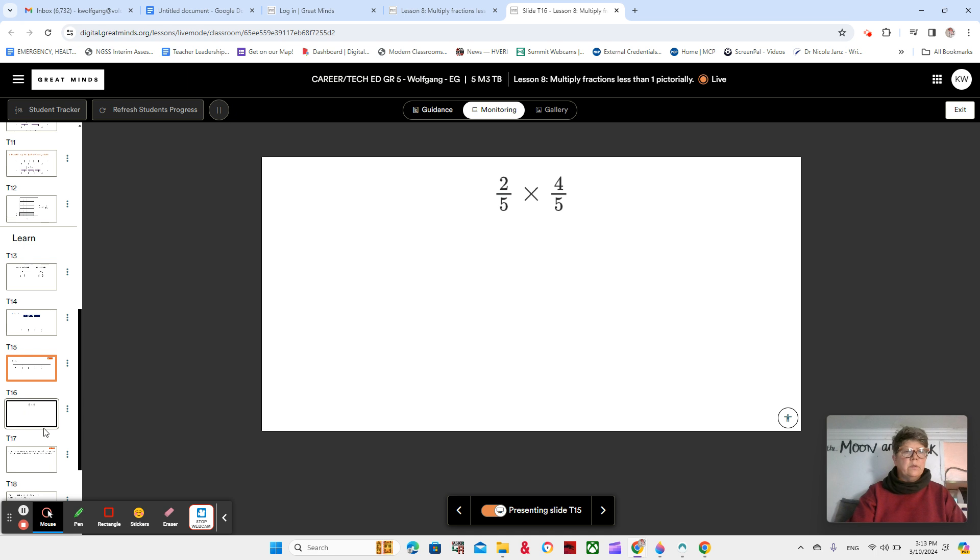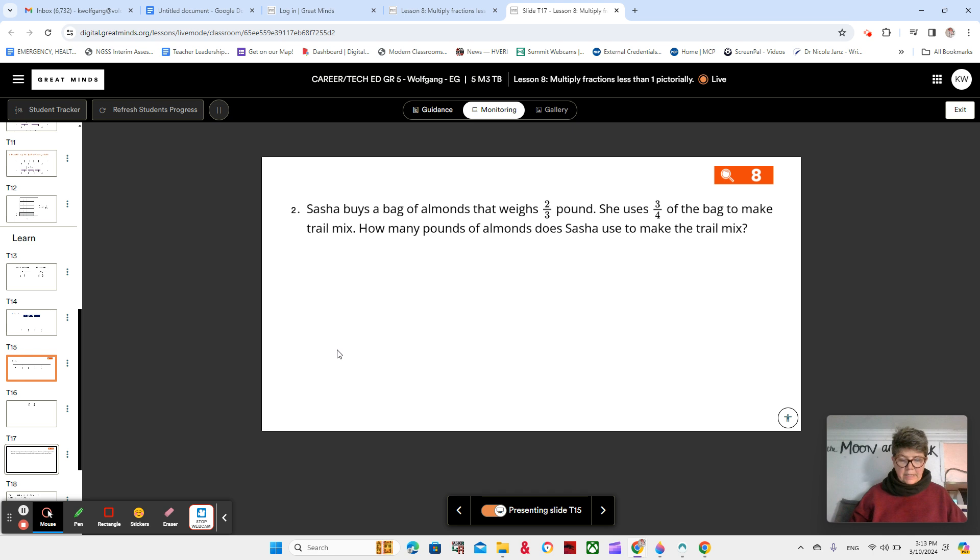Let's go to number two in your book. Sasha buys a bag of almonds that weighs two thirds of a pound. Two thirds of a pound. She uses three fourths of the bag to make trail mix. How many pounds of almonds does she use to make the trail mix? So she's using three fourths of her bag and her bag weighs two thirds. So she's using three fourths of two thirds.